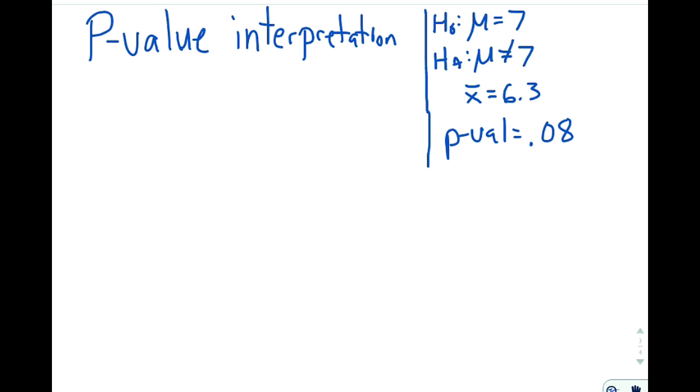We have a p-value that we're given here in this example problem of 0.08. And the example has a null hypothesis where μ = 7, the alternative that it is not equal to 7. We have a sample average of 6.3. We want to figure out how can we use all of that information to interpret that 0.08. What is that 0.08 really the probability of?